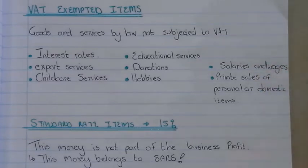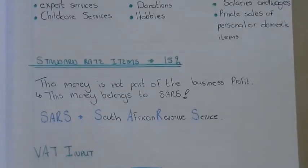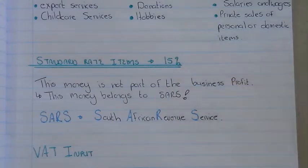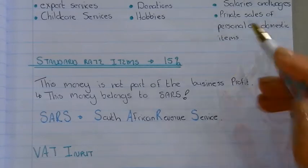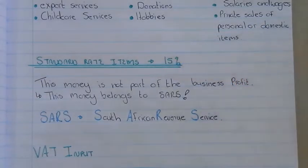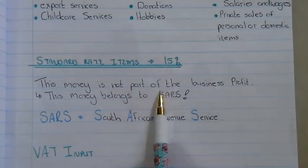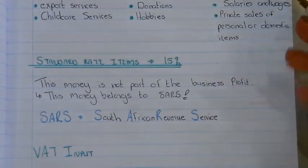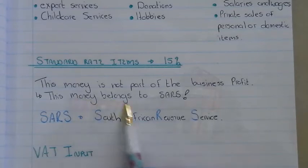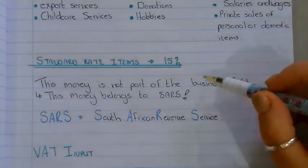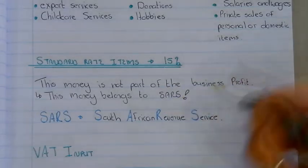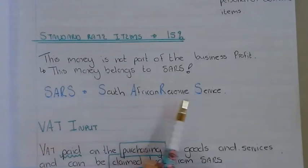Standard-rate items have VAT charged at 15%. For example, when you go to Pick n Pay and buy chocolate, there is 15% VAT on that. This money does not form part of the business profit — the 15% VAT belongs to SARS. We will look at input VAT and output VAT, which clarifies when you can claim from SARS and when you have to pay VAT back to SARS. SARS stands for South African Revenue Services.